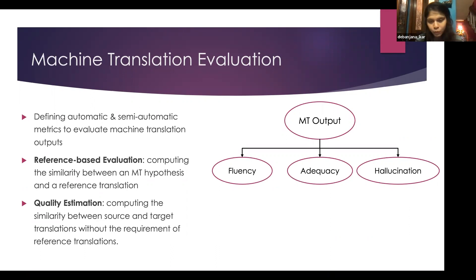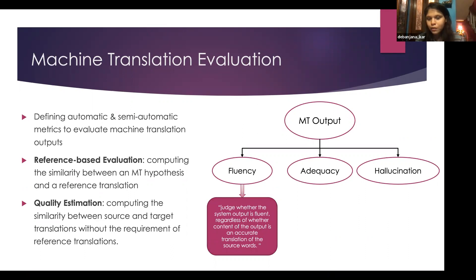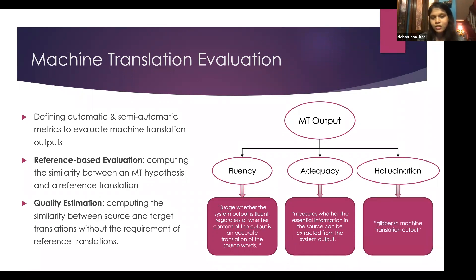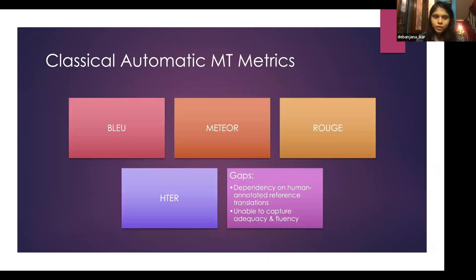For MT output, we mainly look at three things: fluency, adequacy, and hallucination. Fluency judges whether the system output is fluent without focusing on information capture. Adequacy focuses on how much information from the source sentence is captured in the translation output. Hallucination is when the MT output is basically gibberish.